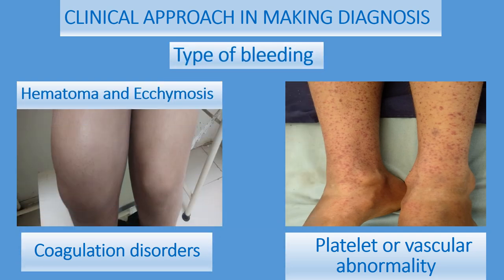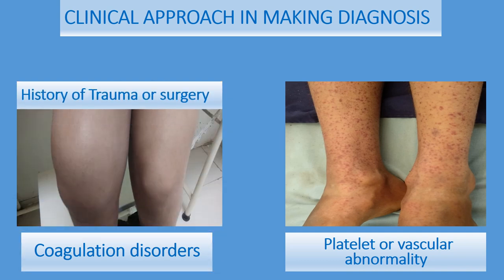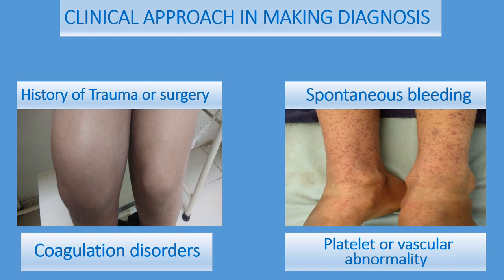According to the type of bleeding: if there is a hematoma or ecchymosis, suspect coagulation disorder; if petechiae and purpura, suspect platelet and vascular abnormality. If there is a history of trauma or surgery with subsequent bleeding, suspect coagulation disorder. This is not hard and fast, but most of the time in coagulation disorder you will find a history of trauma and surgery, while in platelet and vascular abnormality, spontaneous bleeding from skin and mucous membranes will be present.